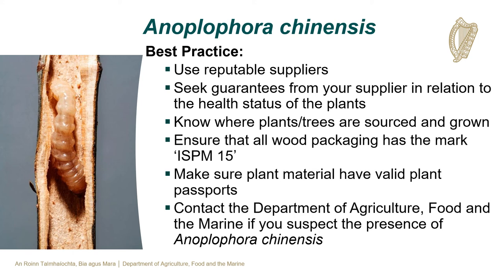Best practice to prevent the introduction and spread of Anoplophora chinensis includes the use of reputable suppliers and seeking guarantees in relation to the health status of the plants. Know where the plants or trees have been sourced, originated from and have been grown. Ensure that all wood packaging material has the ISPM 15 mark. Make sure that all plants or plant material have valid plant passports. If you suspect the presence of Anoplophora chinensis, contact the Department of Agriculture, Food and the Marine.